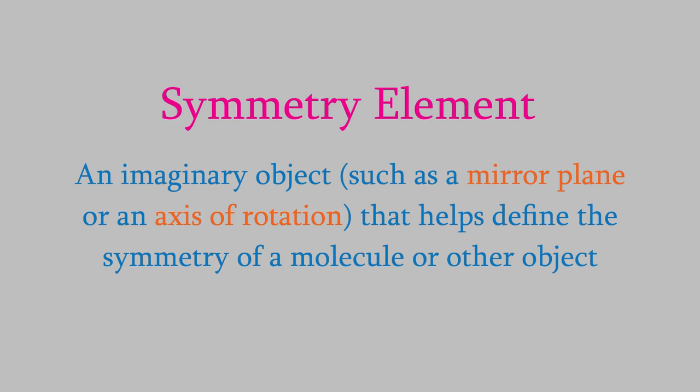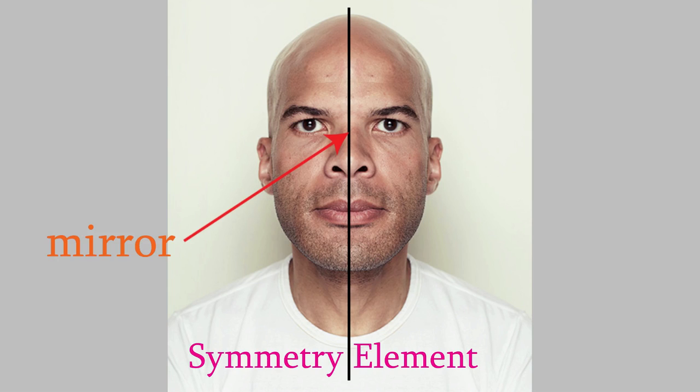A symmetry element is an imaginary reference point in the molecule or object that gives the object its symmetry. For example, take this person's face. His face is very symmetrical — the left and right sides are very similar. We can imagine a plane dividing his face into two halves. That mirror plane would be a symmetry element: an imaginary plane that gives an object its symmetry.